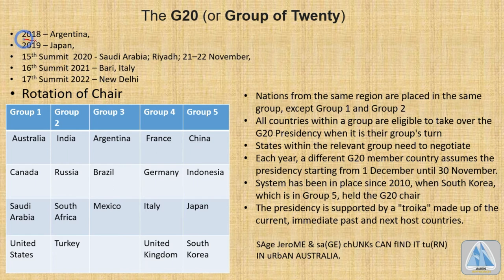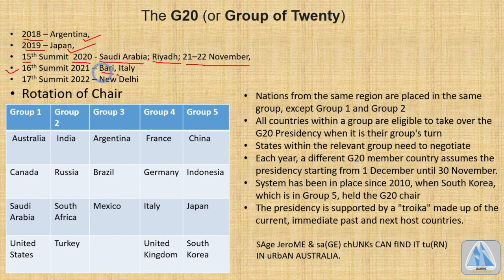The summit for 2018 was held in Argentina; 2019 in Osaka, Japan. The 15th summit for 2020 was to be conducted in Riyadh, Saudi Arabia, with heads of state meeting between 21st and 22nd November. The 16th summit was to be held in Bari, Italy, and the 17th summit for 2022 in New Delhi, India.